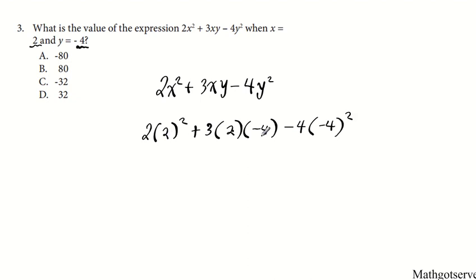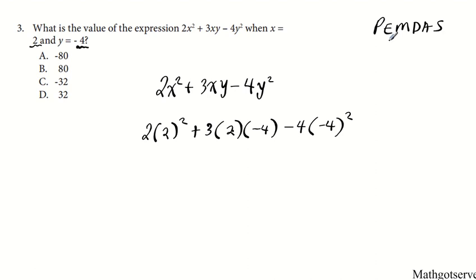The reason it's always good to use parentheses is because it prevents you from making mistakes associated with signs. We're going to use the order of operations to simplify this — do exponents first and then multiply, then add or subtract. Remember: please excuse my dear Aunt Sally. So we're going to square the 2 first. 2 squared is 4, so this term becomes 2 times 4.